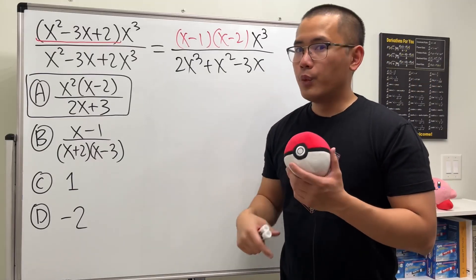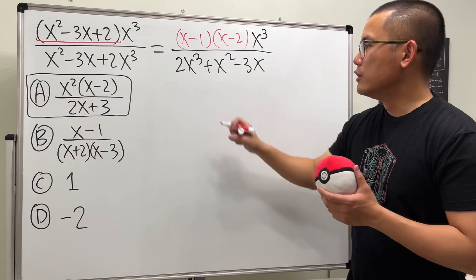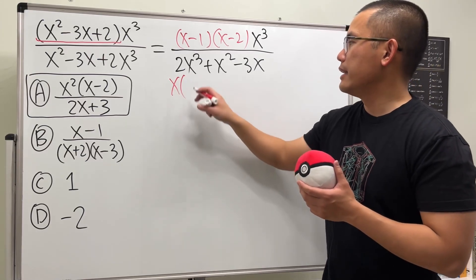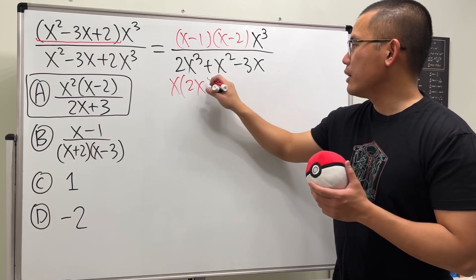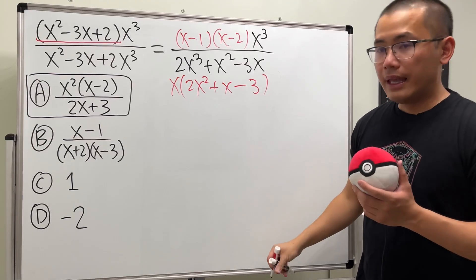From here we can talk about factoring. Notice everybody has x to the first power, so we will factor out x and then we will get 2x² + x - 3.